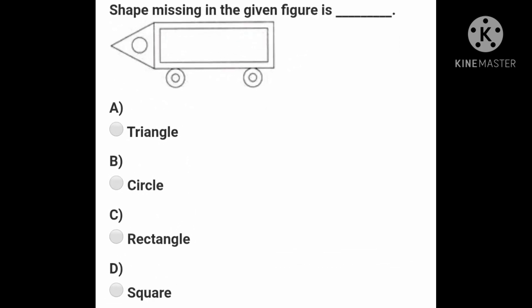See the given figure and identify all the shapes. Now, you see the options given: Triangle, Circle, Rectangle and Square. Now, you see in this figure which shape is missing. That you have to find out.